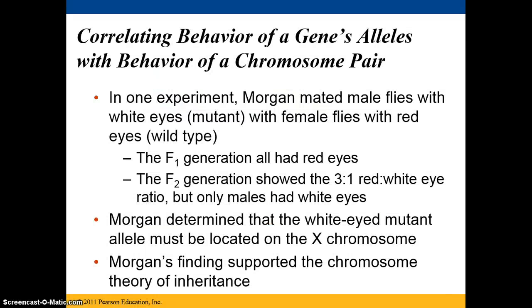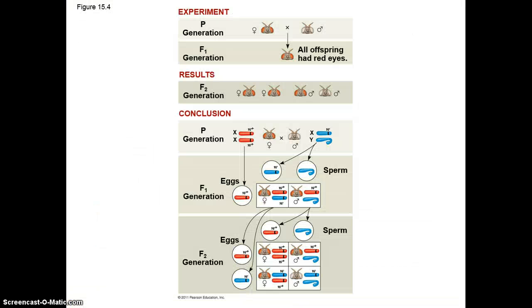He did an experiment where he mated male flies with white eyes with female flies with red eyes — white being mutant, red being wild type. He found that the F1 generation all had red eyes, but the F2 generation showed the 3 to 1 red to white eye ratio. However, only the males had the white eyes. Morgan determined that the white-eyed mutant allele must be located on the X chromosome, which supports the chromosome theory of inheritance.